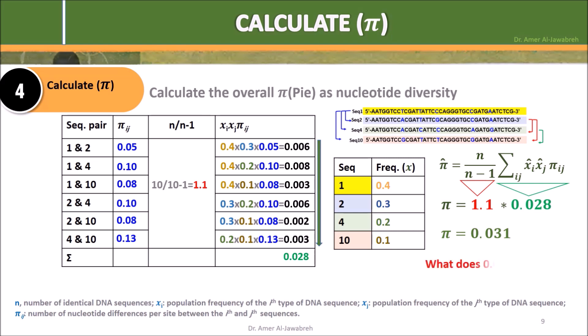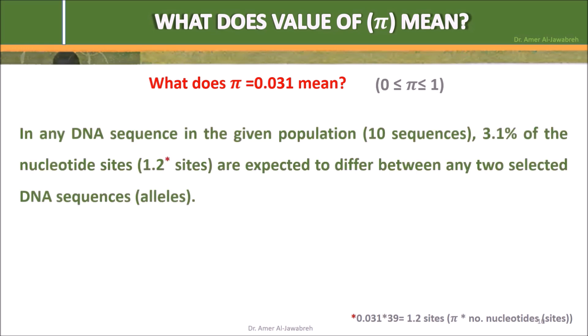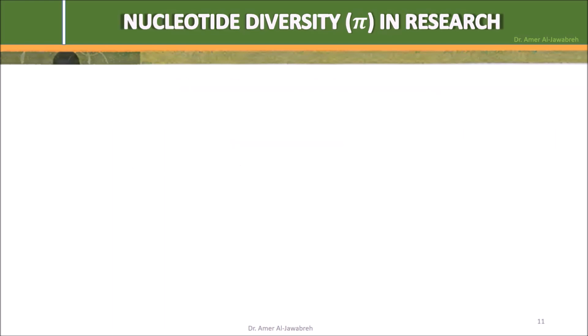What does pi equals 0.031 mean? It means that in any DNA sequence in the given population of 10 sequences, 3.1% of the nucleotide sites — approximately 0.12 sites — are expected to differ between any two selected DNA sequences.